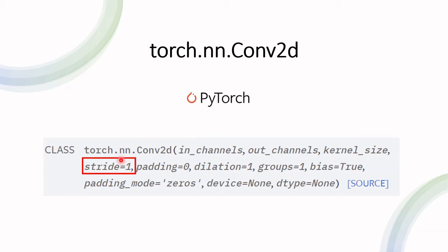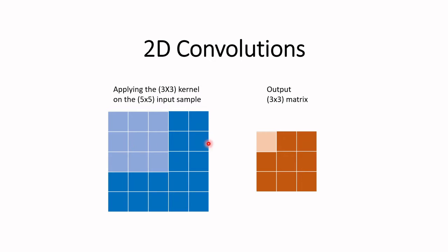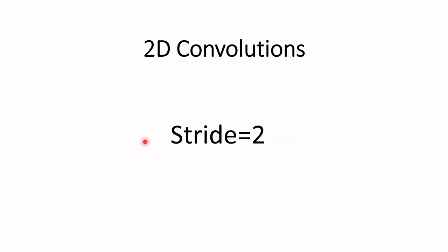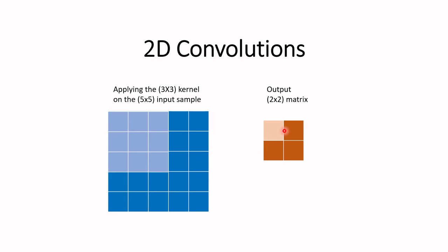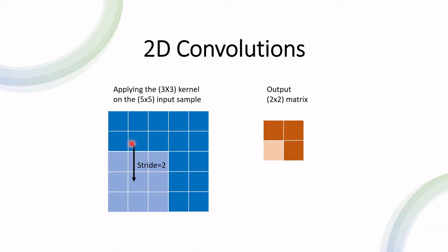The next parameter is stride, which defines how the kernel moves. In the initial example, when we moved the kernel for each corresponding output pixel, the kernel shifted by one — that is a stride of one. If we set stride equal to two, that decreases the output shape to a two by two matrix, because there are fewer shifts the kernel makes. For a stride of two, the kernel moves like this, and it's important to understand that this applies to both the horizontal and vertical movement of the kernel.